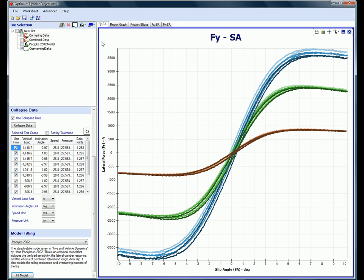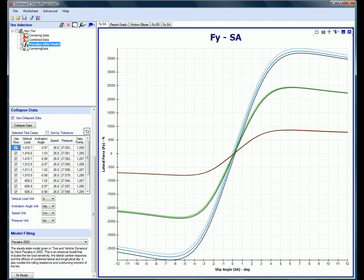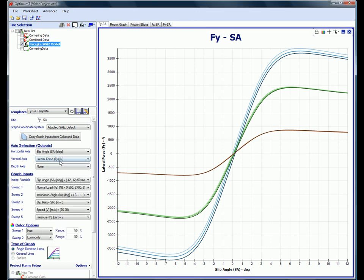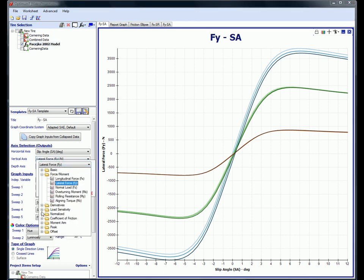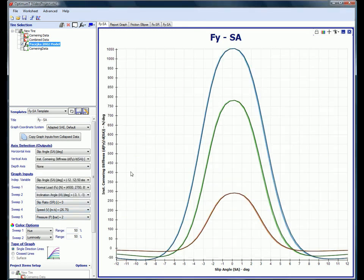Now we're going to explore some of the advanced visualization options of Optimum T. We'll start by graphing a tire model that we've already fit. Now we're going to change the vertical axis to show the instantaneous cornering stiffness, which is the partial derivative of the lateral force with respect to the slip angle. This tells us the relative responsiveness of the tire to slip angle changes.